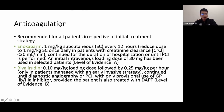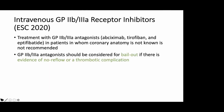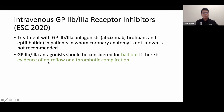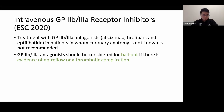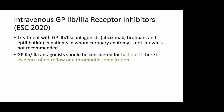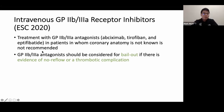Regarding GP2B3A inhibitor use: a discussant raised whether the previous recommendation — giving GP2B3A inhibitors for TIMI scores of five or more — still applies in 2020 guidelines. The 2014 ACC/AHA guidelines noted some benefit in higher TIMI scores. The speaker noted the ESC 2020 guidelines may not specify a TIMI threshold for this, and will verify. The recommended anticoagulation choices include enoxaparin, bivalirudin, fondaparinux, and unfractionated heparin.